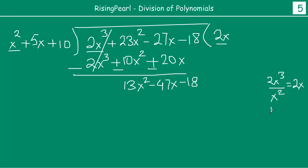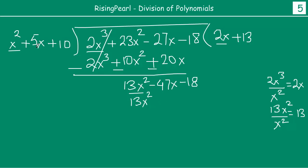What we do next is take the first term, which is 13x squared, and divide by the first term of our divisor, which is x squared. When we do this, we get the resultant as 13. So the next term becomes plus 13. Then we multiply 13 by all the terms of the divisor: 13 times x squared is 13x squared; 13 times 5x is 65x; 13 times 10 is 130.